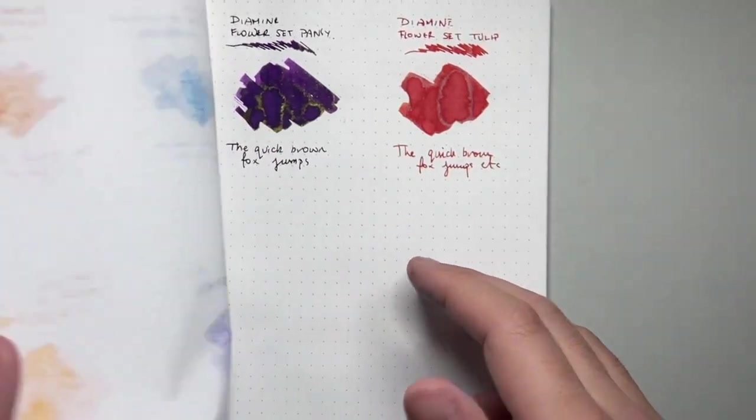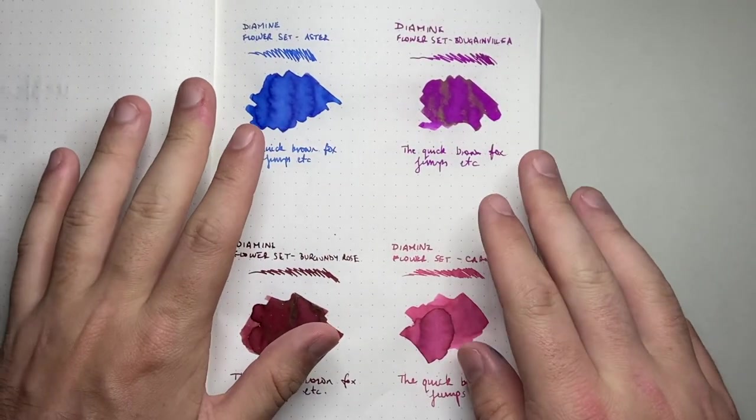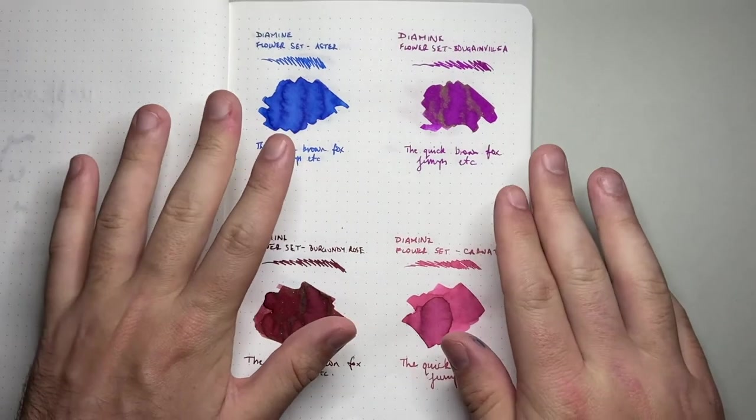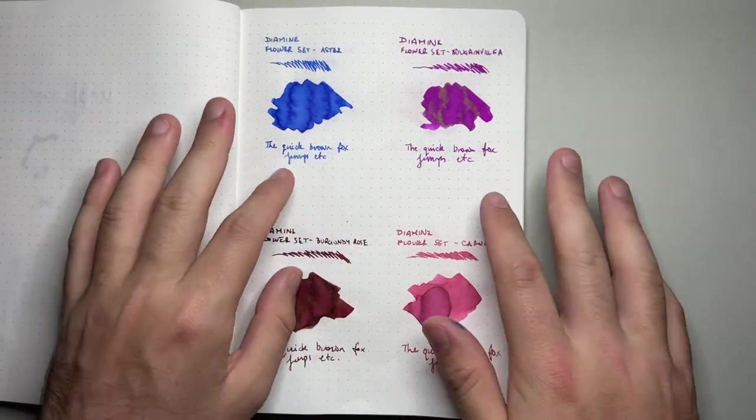So that's them on Tomoe River paper. Let's now look at them on a couple of other papers, and I'll show just a couple of little comparisons, perhaps.